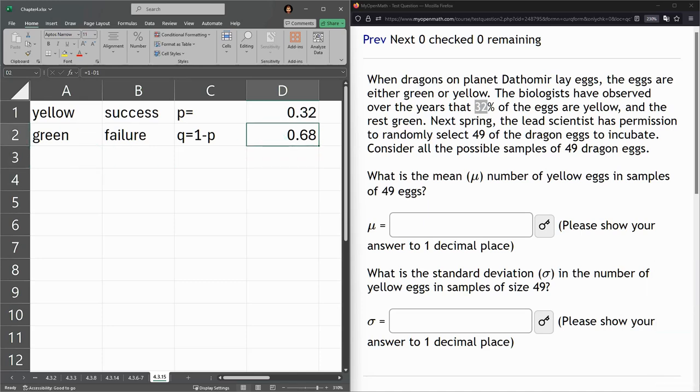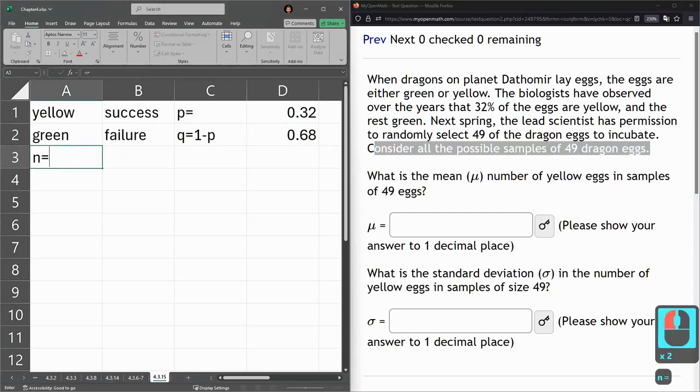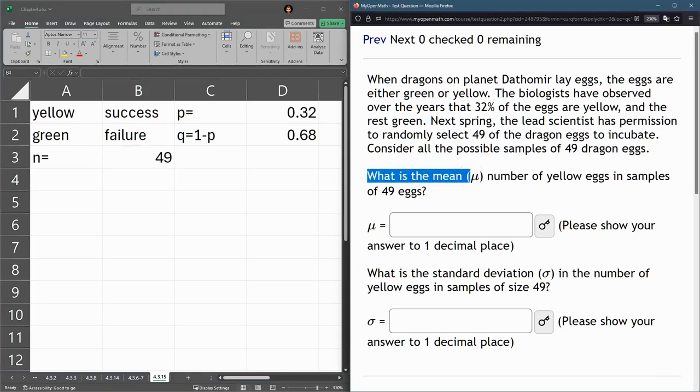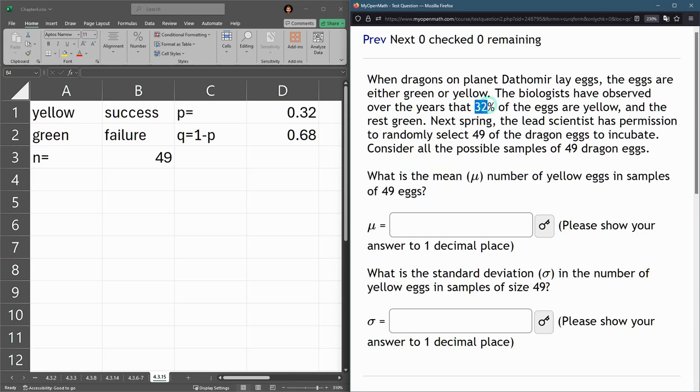Alright, what is this question asking? Well, we have samples of 49 dragon eggs, so that's our n is 49. Now what's the mean or mu number of yellow eggs in the samples of 49 eggs? Now I'll show you how to compute this, but just looking at this, there's a percentage and a number, and that's the only information given. So it would probably be reasonable to multiply those two together.